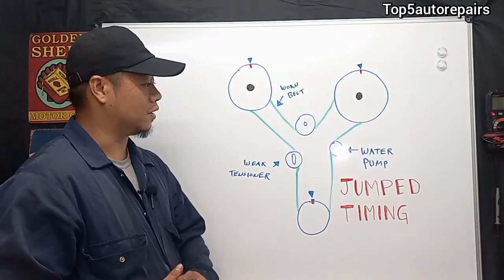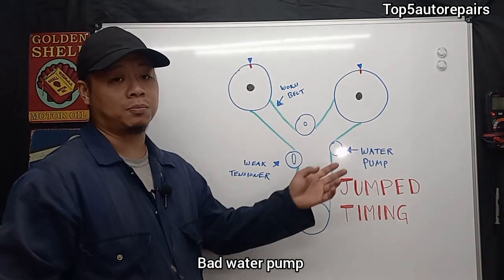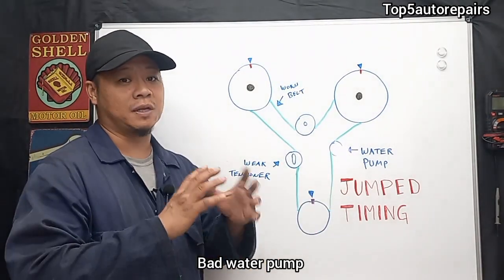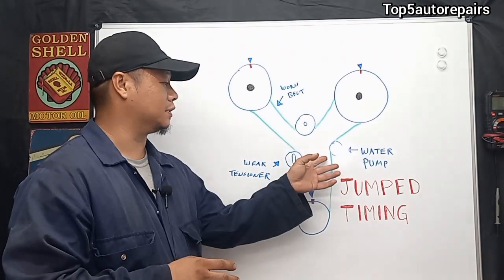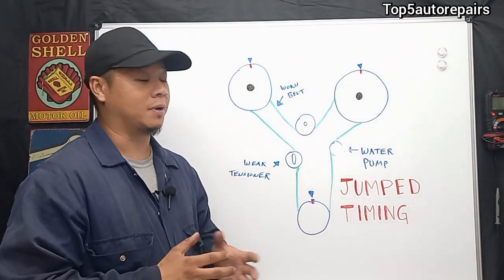Another common cause is going to be a water pump that is failing and the bearings giving out and basically starts to wobble around. It's going to cause the belt or the chain to come out of place.